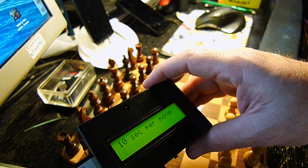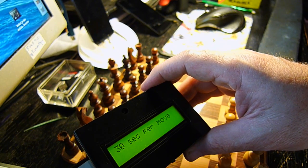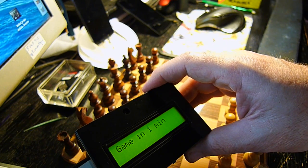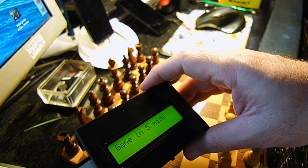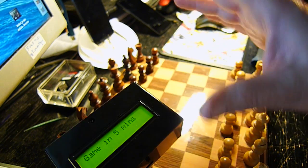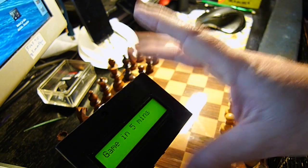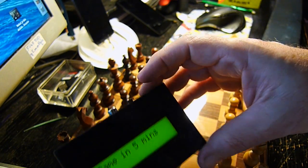The third button is for time controls. Let's say, game in three minutes. No, game in five. Okay, and now we can start with the play.